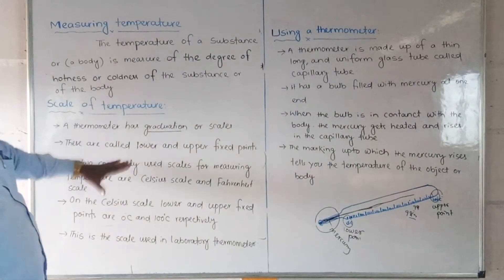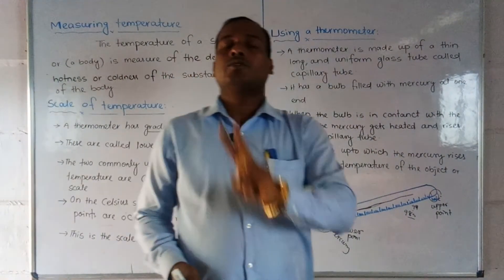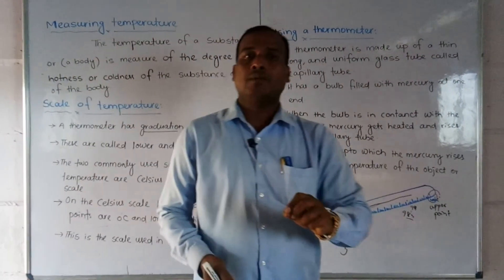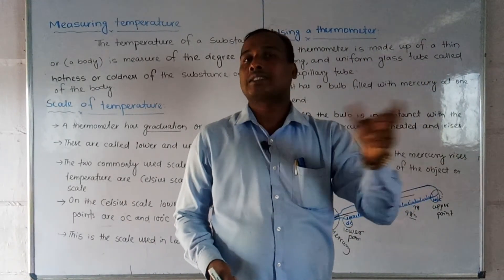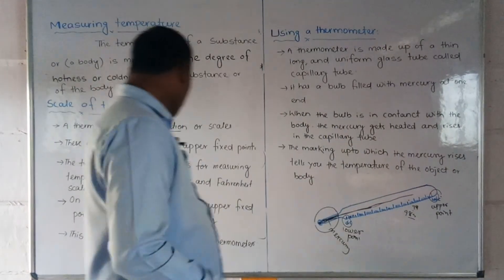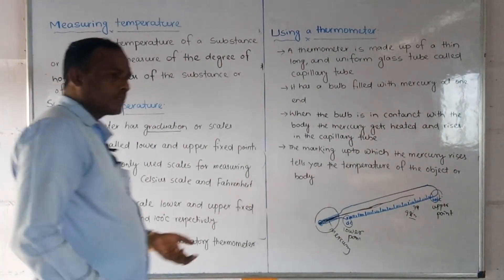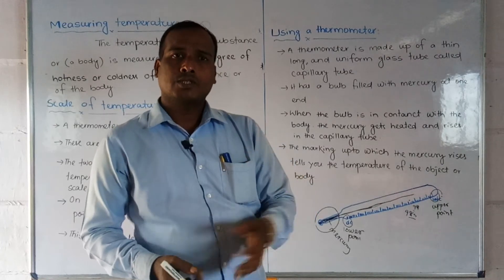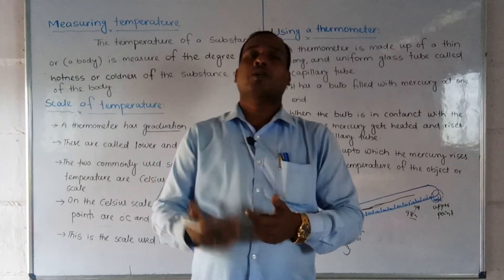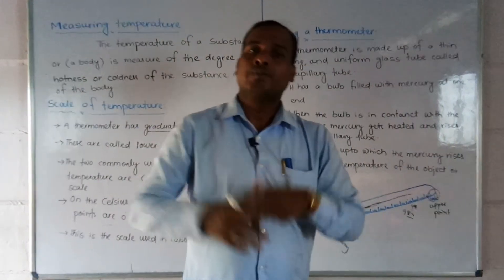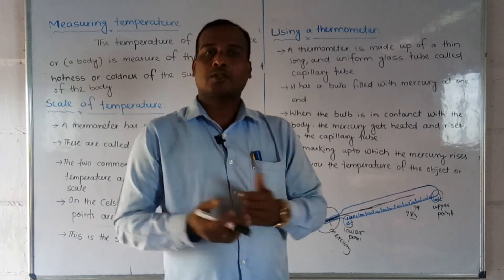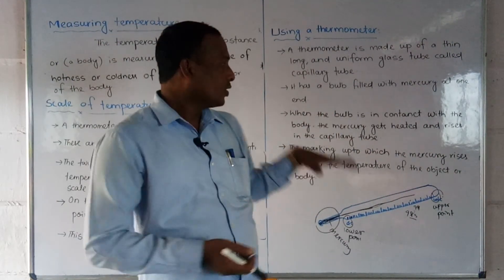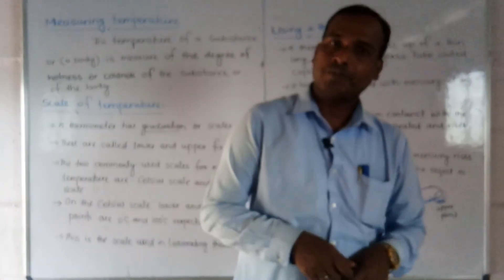So that is how we measure the temperature of the body using a thermometer. The two commonly used scales are the Fahrenheit and Celsius scales, with the lower fixed point at 0 degrees and the upper fixed point at 100 degrees on the Celsius scale. In the next video we will discuss about the different types of thermometers. Please write these notes in your notebook and enjoy the video. Thank you all, have a nice day.